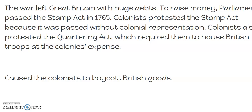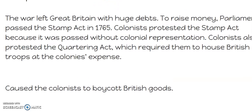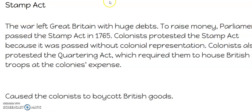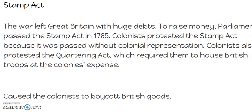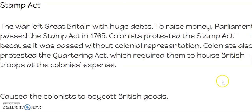Then we get to the Stamp Act. The war left Great Britain with huge debts, and to raise money, Parliament passed the Stamp Act in 1765. Colonists protested the Stamp Act because it was passed without colonial representation — this is where we start to see the battle cry of 'no taxation without representation.' The colonists also protested the Quartering Act. This caused the colonists to get the British's attention by boycotting British goods.